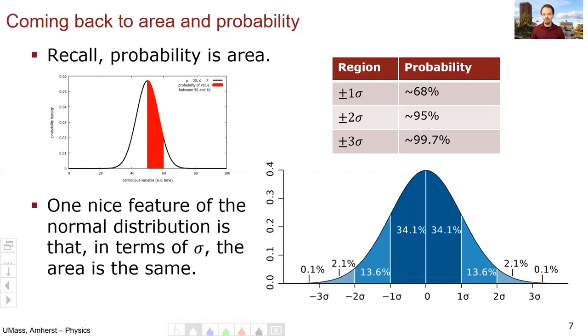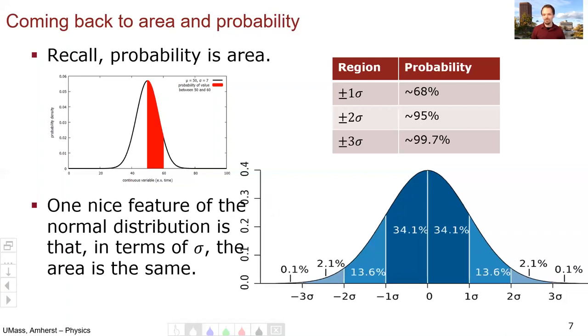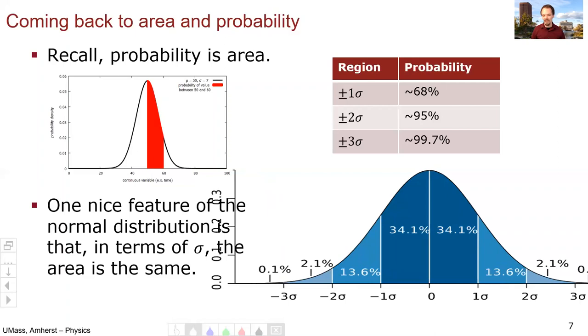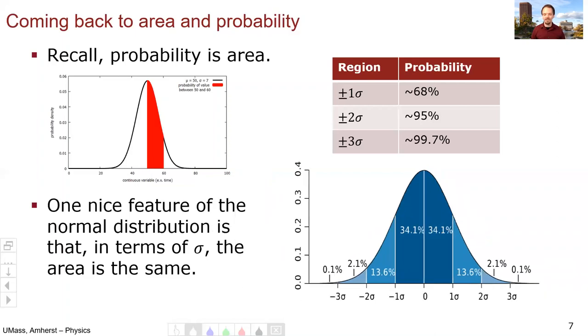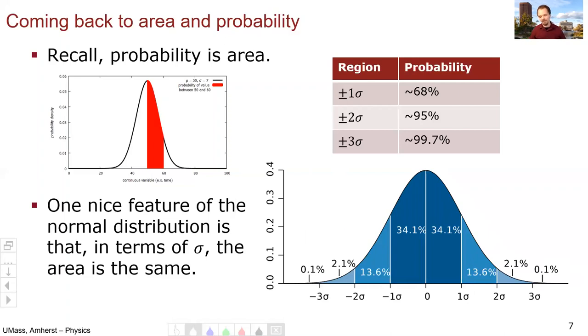So as I said, one nice feature of the normal distribution is that if I'm looking in terms of sigma, in terms of, instead of absolute values, in terms of numbers, the area is always the same. It doesn't matter how much I stretch this distribution or squeeze it down. The area between minus one sigma and plus one sigma is always going to be 68%.